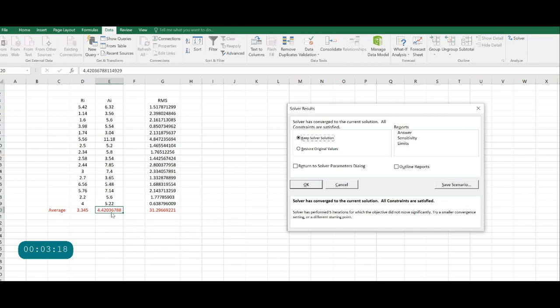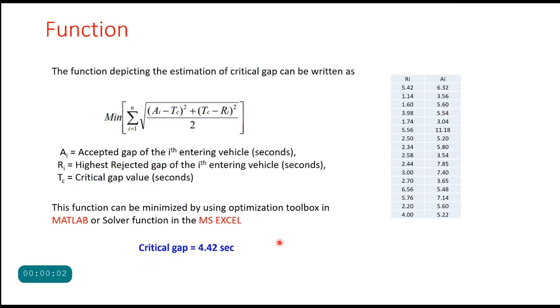Immediately you get the value of critical gap as 4.42. This RMS value has now reduced to 31.2. The critical gap value is obtained as 4.42 seconds.